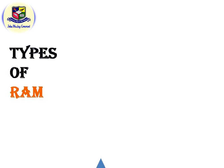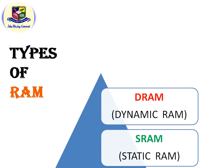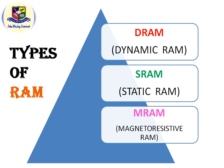Next, let's talk about the types of RAM. We have three different types of RAM: the first one is DRAM, the second is SRAM, and the third one is MRAM.